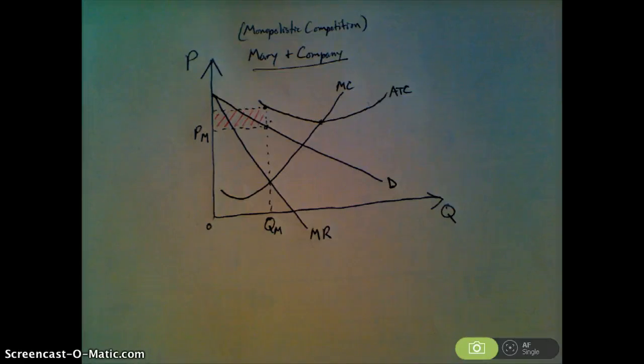The company's profit is going to fall, because as new firms enter the marketplace, it means that they're going to be driven to a situation where the price is just equal to their average total cost at QM. So for C, the number of firms would increase if Mary and Company were earning profits. And as those firms entered, it would cause the price for Mary and Company to fall until it was equal to their average total cost.